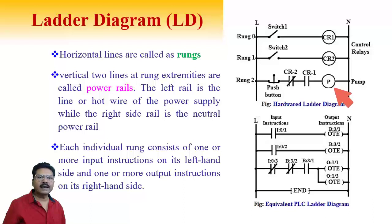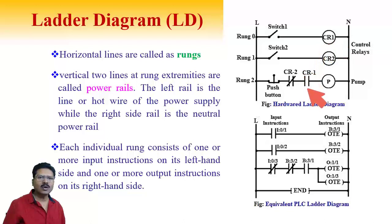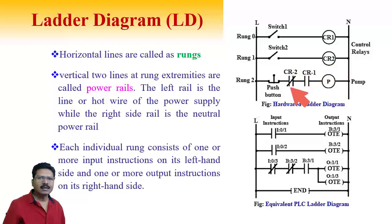How this relay logic works: when the start switch is pressed, relay coil CR1 is energized, and a normally open contact from CR1 is taken as a hold contact. When the stop switch is pressed, relay coil CR2 is energized, and its normally closed contact is taken — so when CR2 is energized, this provides logic zero. The push button is a normally closed contact.